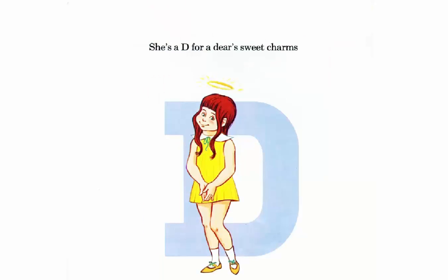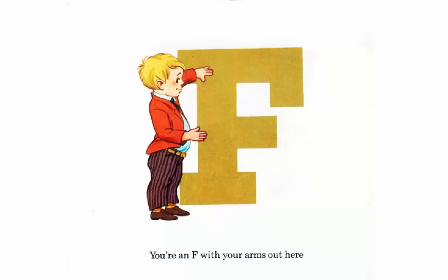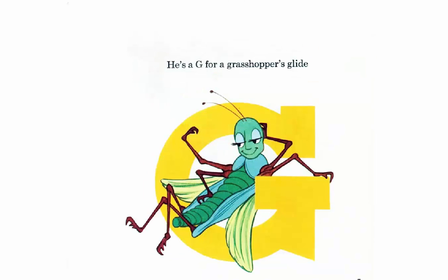She's a D for a deer's sweet charms. I'm an E for an elephant's ear. You're an F with your arms out here. He's a G for a grasshopper's glide.